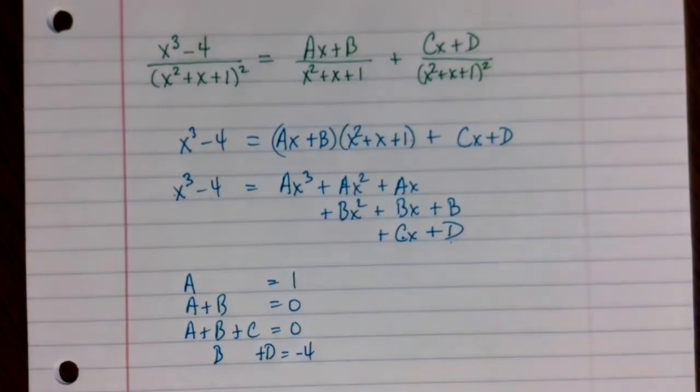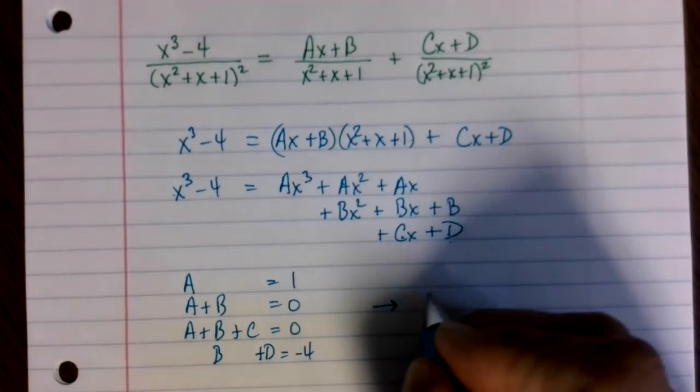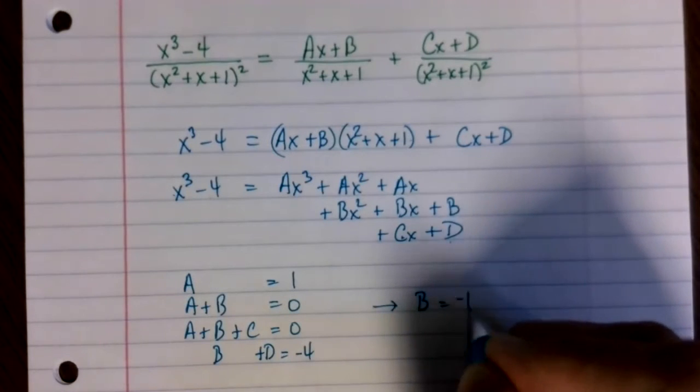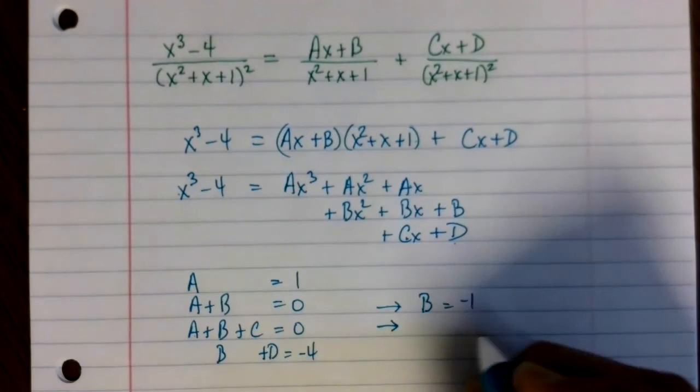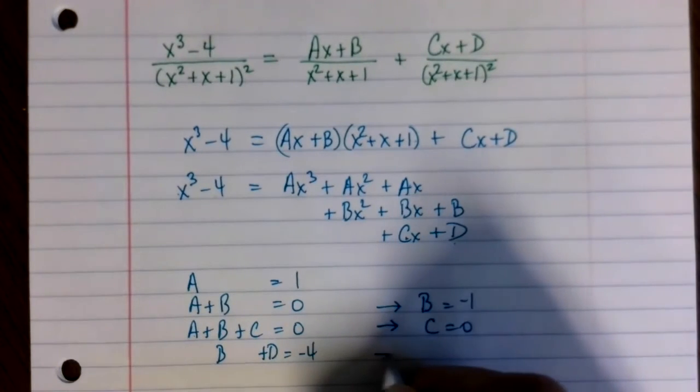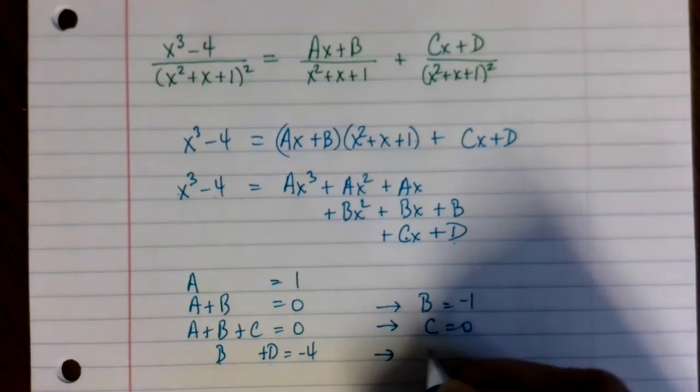OK, so we can just read these right off. So a is equal to 1. So this line means that b is equal to negative 1. If a is 1 and b is negative 1, then that means c is equal to 0. And finally, if b is equal to negative 1, then to add up to negative 4, d must be equal to negative 3.